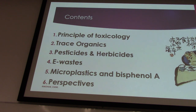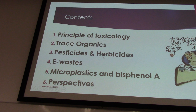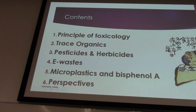We started off with examples of trace organics, and we still have a lot of concerns from herbicides and pesticides — for killing pests and herbs. And newly emerging chemicals also come from a group of materials known as electronic waste. These chemicals include trace elements and brominated compounds.